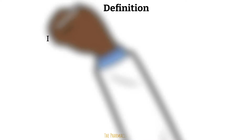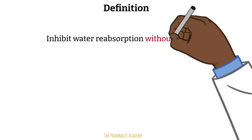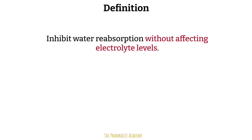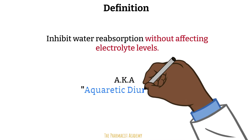Osmotic diuretics primarily inhibit water reabsorption without increasing the loss of electrolytes, like we see with other diuretics. For example, with loop diuretics, not only do we lose water, we also lose electrolytes like sodium, potassium, chloride, and magnesium. But osmotic diuretics are like true water diuretics, and that is why sometimes we call them aquaretic diuretics.